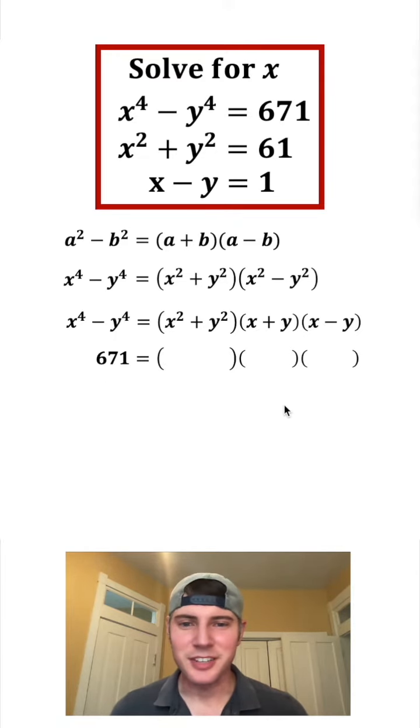Now let's give ourselves some parentheses for this side. x squared plus y squared is equal to 61, and then x plus y will leave as x plus y, and x minus y is equal to 1.